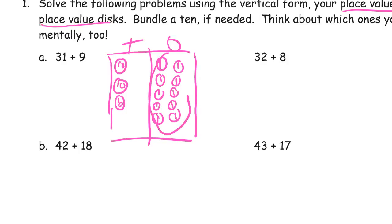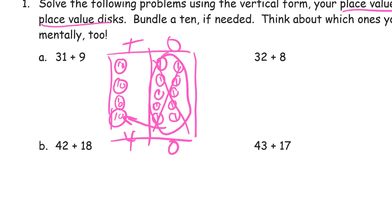There are ten ones, and that's going to be redrawn as a ten over here. I'm not going to count these twice, so I don't have any other ones to count. I'll have zero ones and four tens for forty.